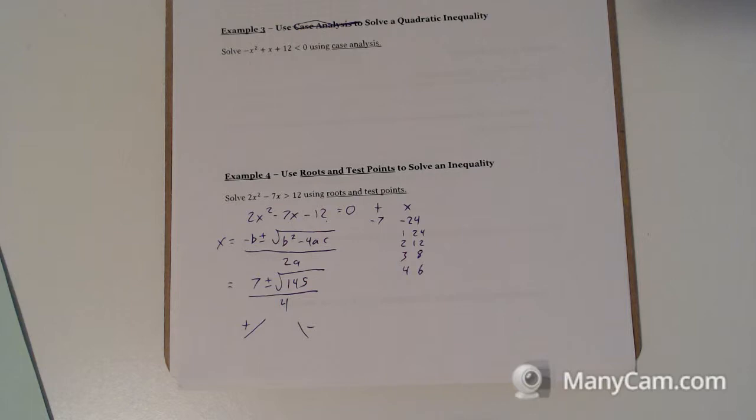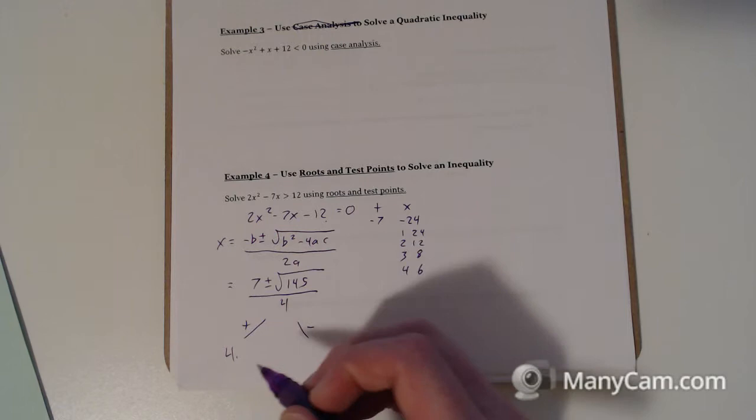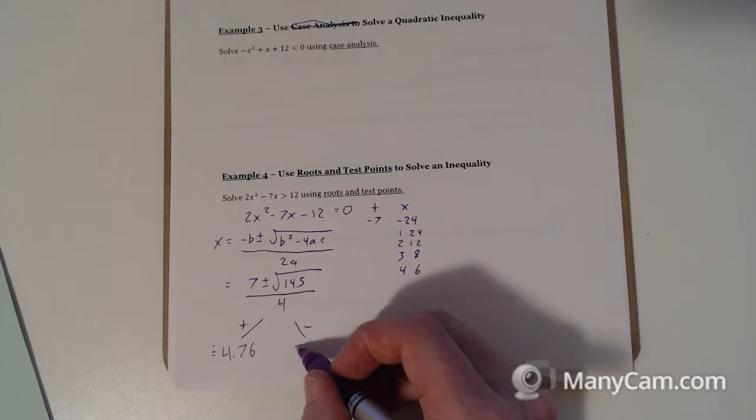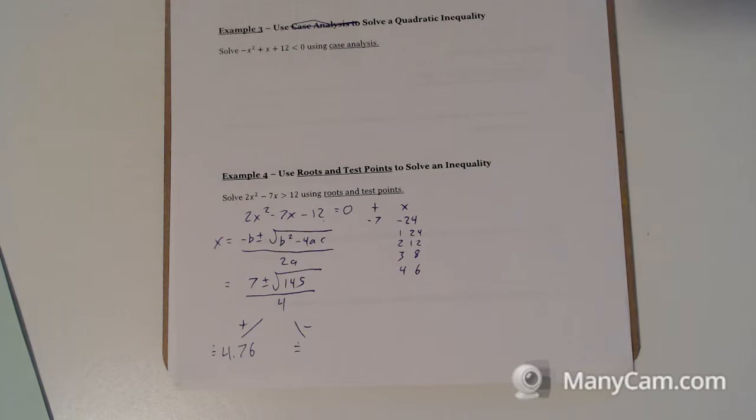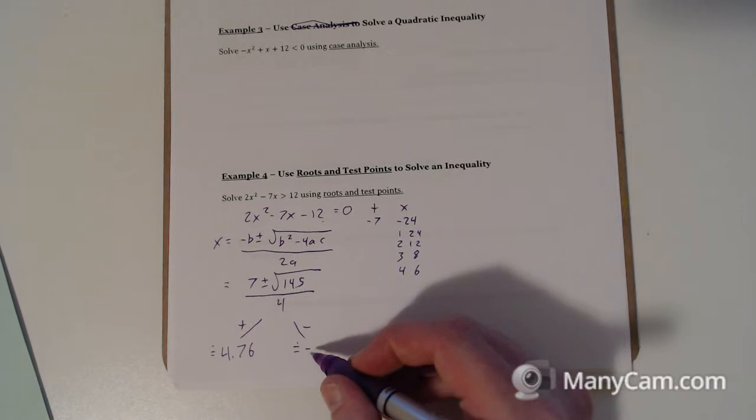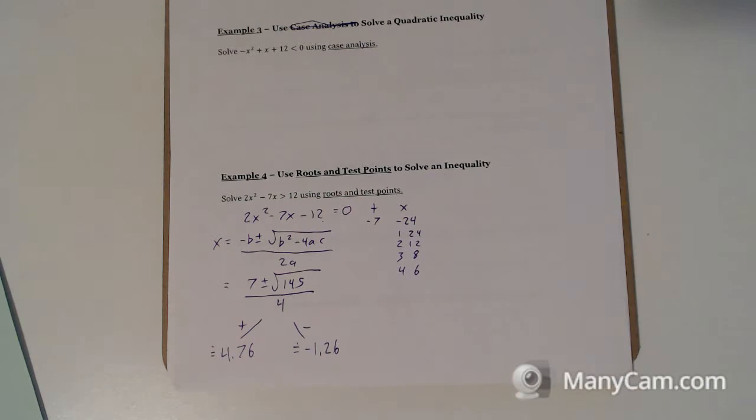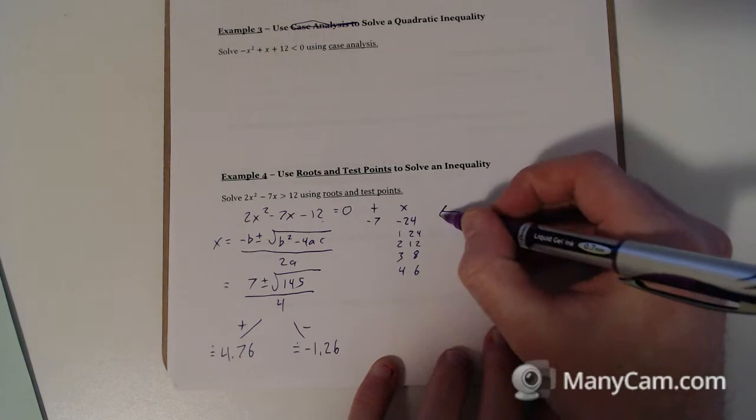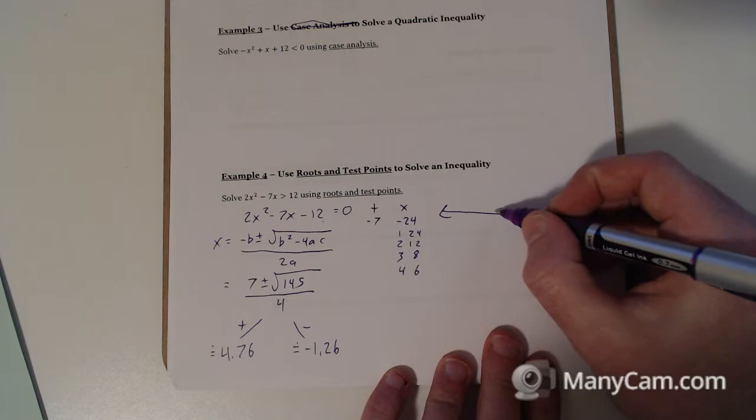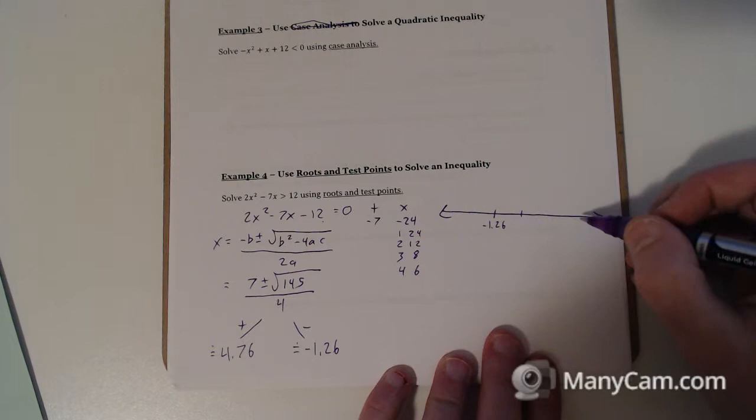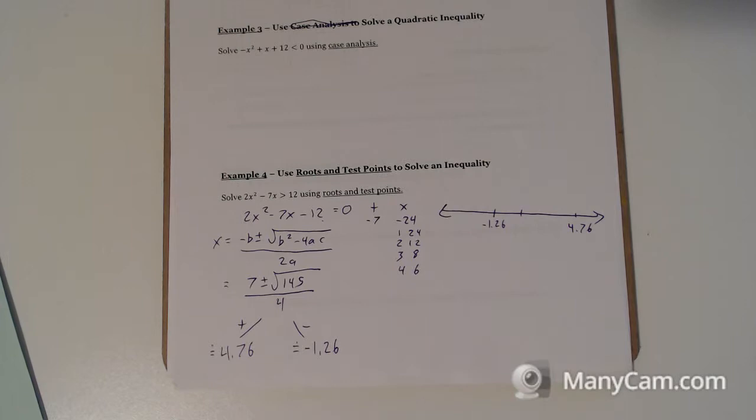We're trying to find a range and roots don't really work really well on a number line. So let's just do decimals. 7 plus the root of 145 divided by 4 is 4.76 approximately. And 7 minus root of 145 divided by 4 is equal to approximately negative 1.26. And now we just need to set up our number line. It doesn't have to be a perfect line. And we're looking for negative 1.26. So we've got 0 somewhere here, and then we've got 4.76.